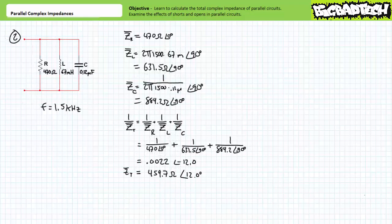For our second example problem, we've been given a parallel relationship of a 470 ohm resistor, a 67 millihenry inductor, and a 0.12 microfarad capacitor at an excitation frequency of 1.5 kilohertz or 1,500 hertz. The resistor is an impedance of 470 ohms at zero degrees. The inductor is an impedance of 631.5 ohms at positive 90 degrees, and the capacitor is an impedance of 884.2 ohms at negative 90 degrees. Using the more involved method for two or more impedances in parallel, we arrive at a total impedance of 459.7 ohms at an angle of positive 12 degrees.